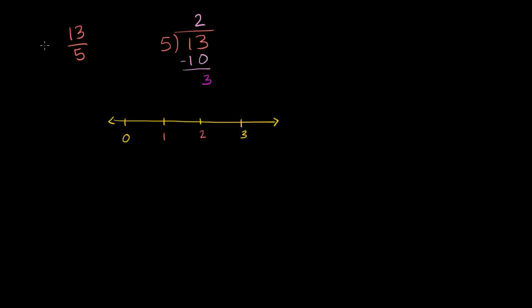So 13 over 5 is the same thing, is the exact same thing, as 2 and 3 over 5. And so now we're ready to plot it.